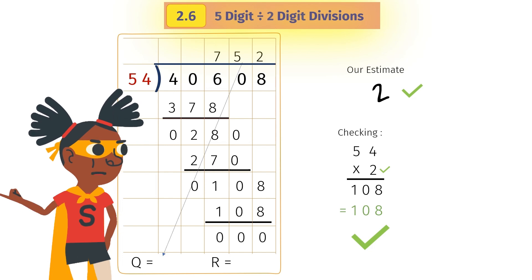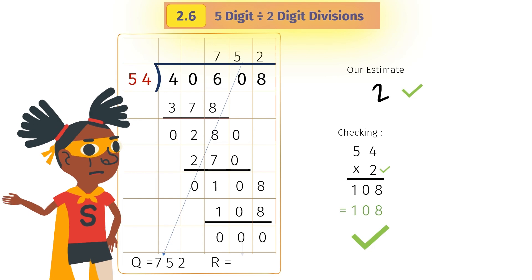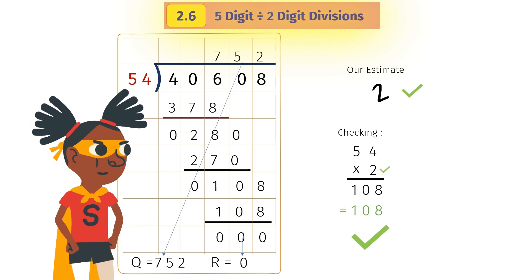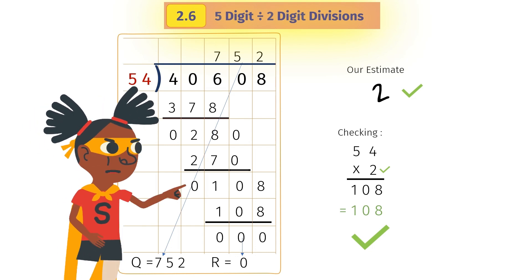We have the quotient 752 and remainder 0. That's how to divide by 2-digit numbers.